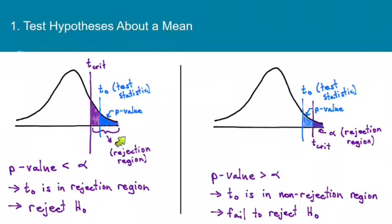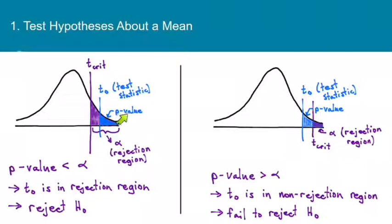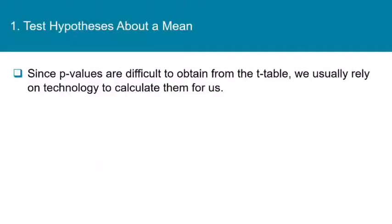These diagrams illustrate the difference between the classical approach and the p-value approach. With the classical approach, we shade alpha and draw the critical value on our normal curve, then compare the test statistic to see if it falls in the rejection region. With the p-value approach, we are comparing areas — we just want to see if the p-value is less than or greater than alpha. Since p-values are difficult to obtain from the t-table itself, we usually rely on technology to calculate p-values for us.